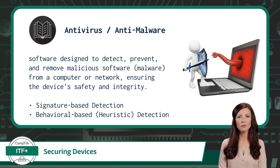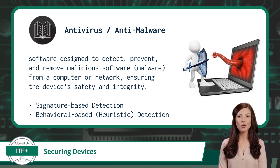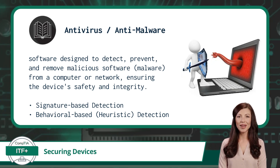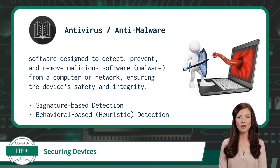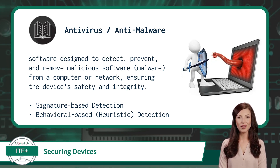First up, we have antivirus and anti-malware software. Antivirus and anti-malware software are your device's primary line of defense against malicious threats — it is software designed to detect, prevent, and remove malicious software, known as malware, from a computer or network. You might think of it as a vigilant knight, protecting your digital realm from would-be intruders.